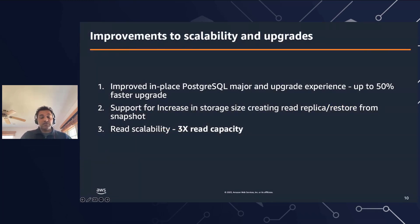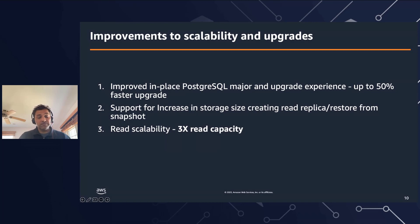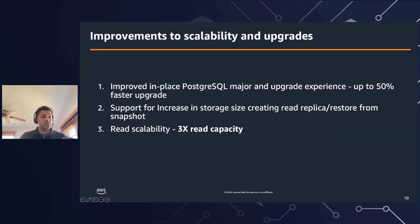The next set of improvements we've done is around scalability and upgrades. One key change is around major version upgrades. A major version in Postgres is released by the community about every year, and we do the same. When doing an in-place major version upgrade, there is some downtime incurred. We have seen up to 50% faster upgrades through improvements in a managed service's pre-checks — we have optimized those pre-checks and in some cases made them online, reducing your downtime.